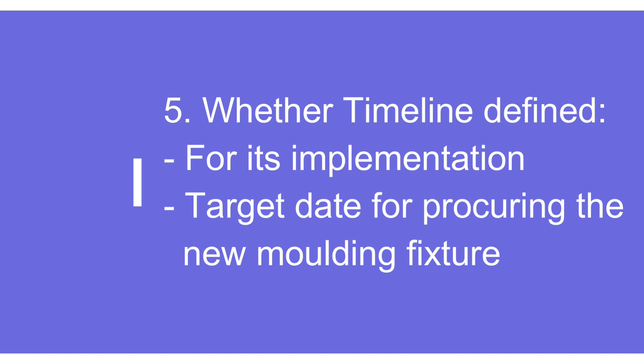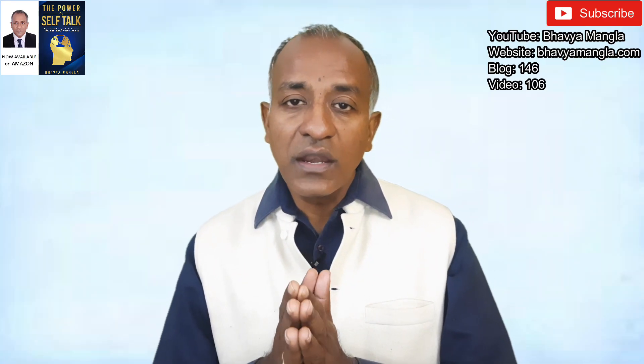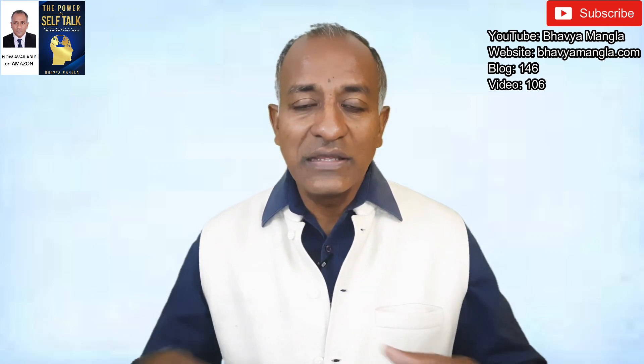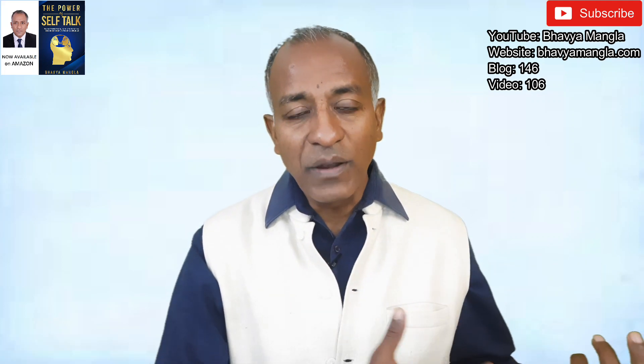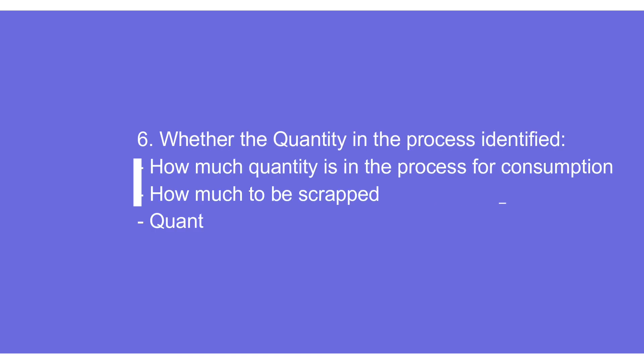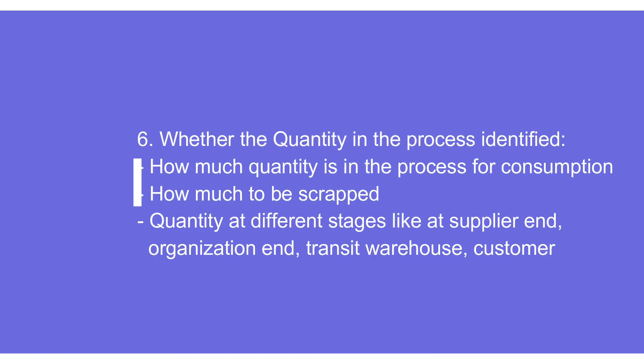Step number six is about the quantity. During mass production there is a lot of material in process — at the supplier end, organization end, in transit, or at the customer end. What are we going to do with that material? We need to find an answer: whether to scrap it or use it, and if we use it, within what timeline — 10 days, 15 days, or 30 days. All that needs to be determined.